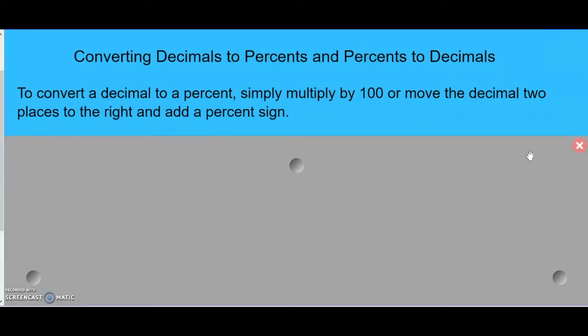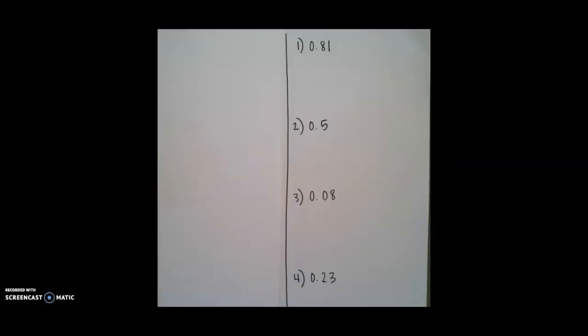In order to convert a decimal to percent, simply multiply by 100 or move the decimal two places to the right and add a percent sign. Here are some examples.